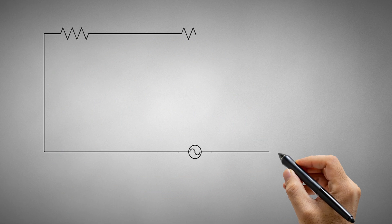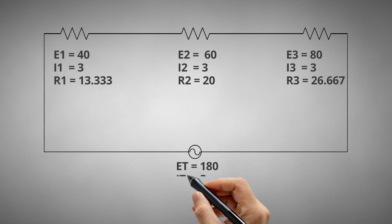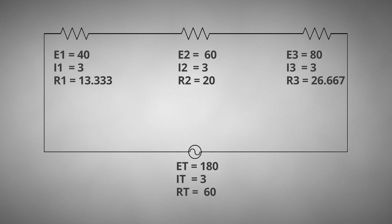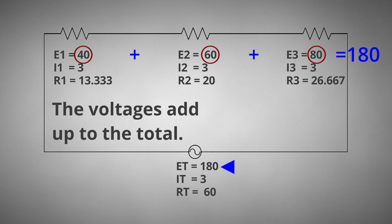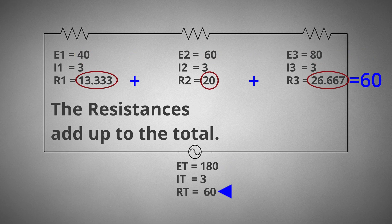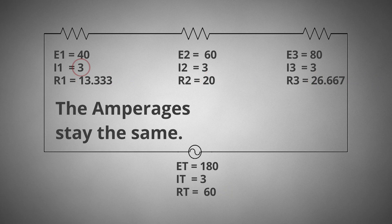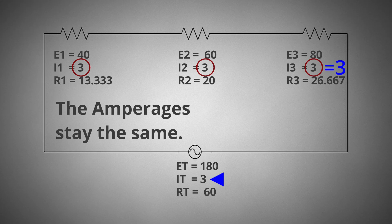Series circuits are often referred to as simple circuits since all the quantities are additive except for ampacity, which stays the same throughout the circuit. To calculate the total voltage in a series circuit, simply add together all the voltage drops. To calculate the total resistance in a series circuit, simply add together all the resistors. Since a series circuit only has one path for current to flow, the total current is the same anywhere in the circuit — the amperages stay the same.